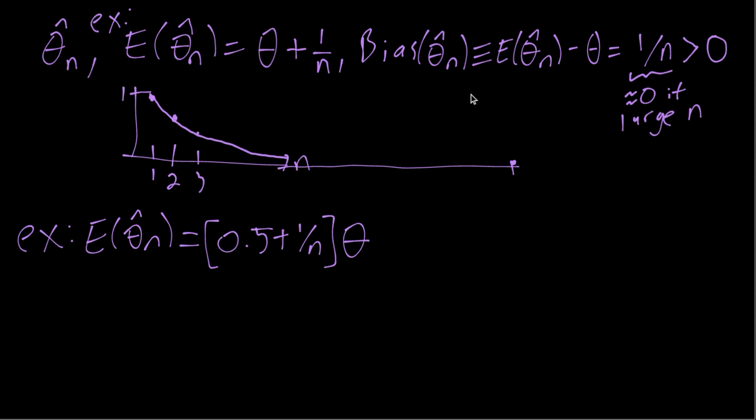Now in this case, we might be tempted to think, well, if n is large, then nothing is ever biased. But in this case, even though this 1 over n term, we can say, well, if n is large, that's approximately 0.